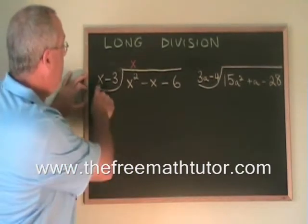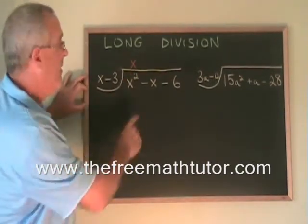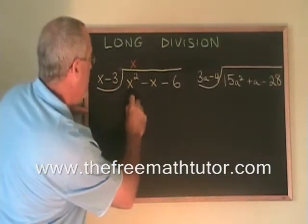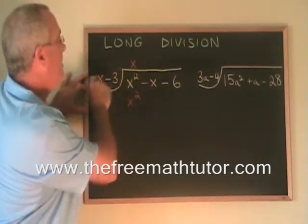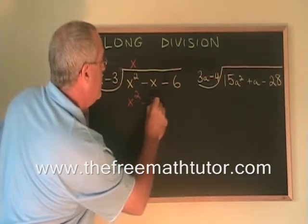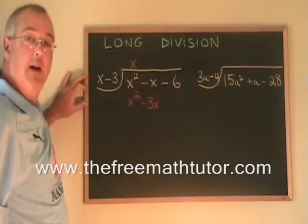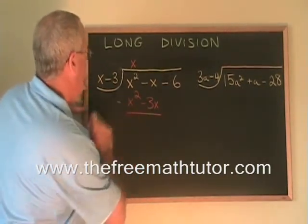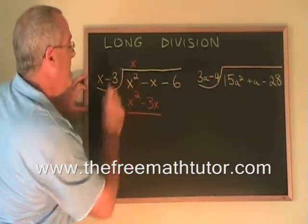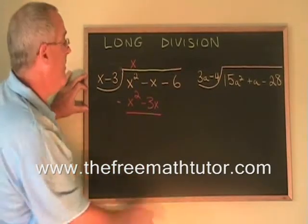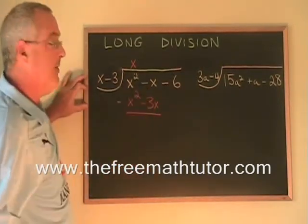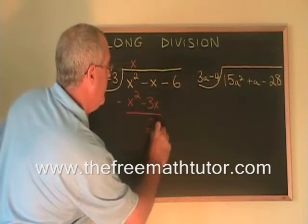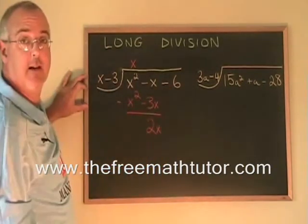Then we multiply this binomial by the x and write the answer here. x times x is x squared. x times negative 3 is minus 3x. And now, just like in regular long division, we subtract. x squared minus x squared is zero — it cancels. x minus negative 3x is equal to negative x plus 3x, which is 2x. And the minus 6 carries down.